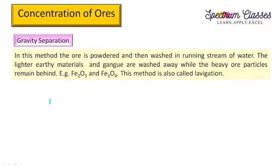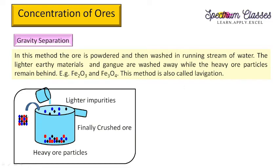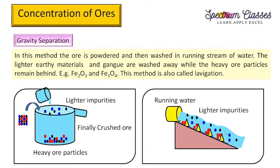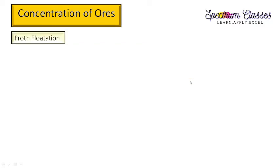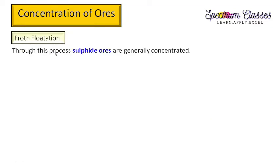First is gravity separation. In this method, the ore is powdered, crushed finely and added to the tank, then washed with a running stream on a platform. The lighter earthy materials and the gangs are washed away since they are lighter in weight, and the heavier particles remain. In this way, ores are left behind. This method is applicable for iron ores which are heavier than the gang particles, and is also called lavigation.